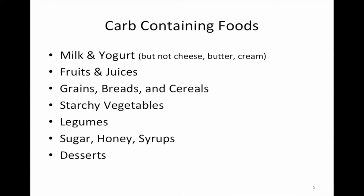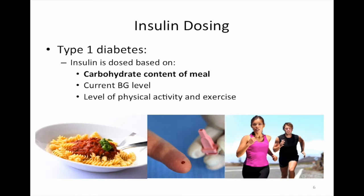Carb-containing foods in the milk and yogurt group are just that — not cheese, butter, or cream, because when you make cheese it's combining the protein and the fat, whereas milk and yogurt have lactose. Fruits and juices are quite concentrated in simple sugars. There are grains, breads, cereals, starchy vegetables like potatoes and corn, the whole bean family, all added sugars, honey, sweets and syrups, and the desserts made with them — these are all things that people with diabetes have to consider when planning their dose.